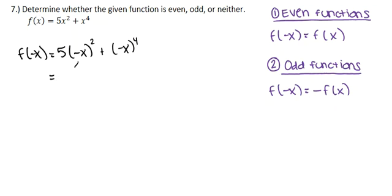Negative x squared is technically negative x times negative x. And remember, a negative times a negative is a positive, so this gives us 5x squared plus, and this is negative x times negative x times negative x times negative x. Negative times a negative is a positive, negative times a negative is a positive, so this will get us positive x to the fourth.